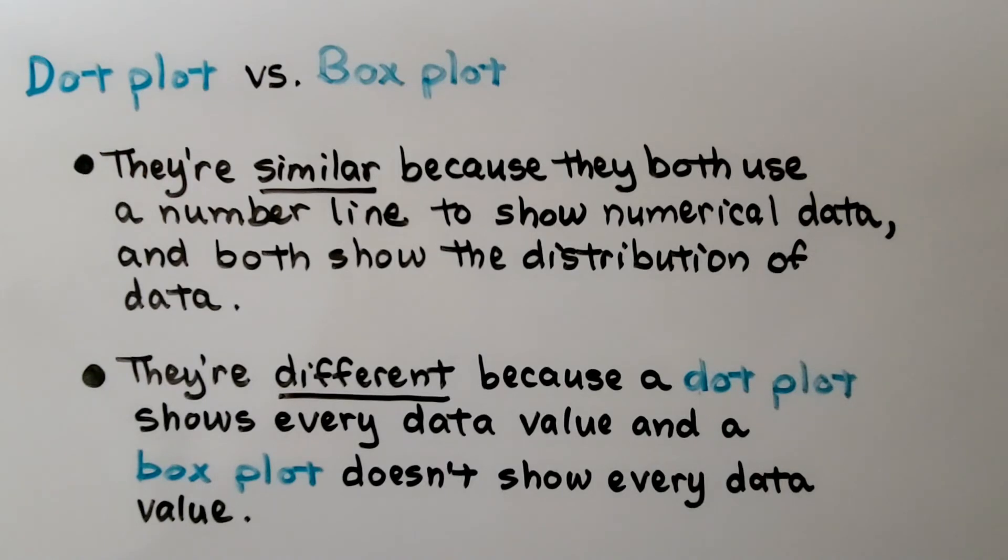Comparing a dot plot to a box plot, they're similar because they both use a number line and show numerical data, and both show the distribution of the data. They're different because a dot plot shows every data value and a box plot doesn't show every data value.